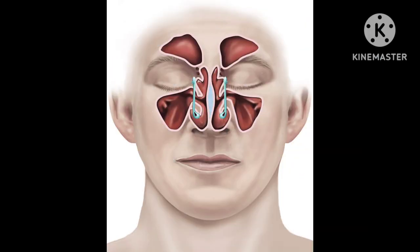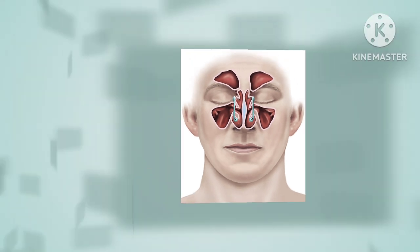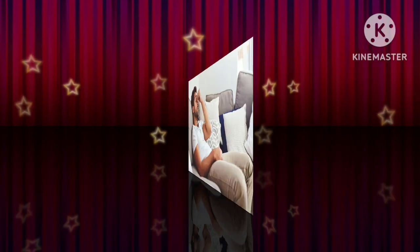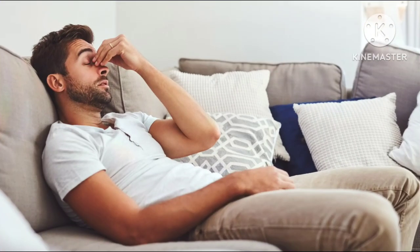Immunotherapy involves giving gradually increasing doses of the substances to which the person is allergic. This works by making the immune system less sensitive to those substances, probably by causing production of a particular blocking antibody, which reduces the symptoms of allergy when the substance is encountered in the future.